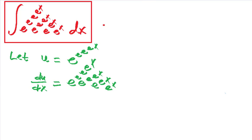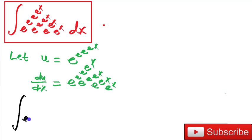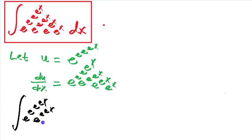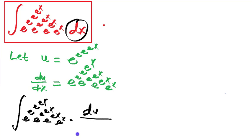Let me rewrite the integral now. We have the integral of e to the e to the e to the e to the x, times e to the e to the e to the x, times e to the e to the x, times e to the e to the x. For dx I will write du divided by e to the e to the e to the e to the x times e to the e to the e to the x times e to the e to the x times e to the e to the x. As you can see, all of this cancels with all of this.